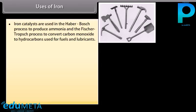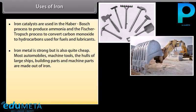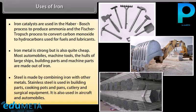Uses of Iron: Iron catalysts are used in the Haber-Bosch process to produce ammonia and the Fischer-Tropsch process to convert carbon monoxide to hydrocarbons for fuels and lubricants. Iron metal is strong and cheap — most automobiles, machine tools, hulls of large ships, building parts and machine parts are made from iron. Steel is made by combining iron with other metals; stainless steel is used in building parts, cooking pots and pans, cutlery, surgical equipment, aircraft and automobiles.